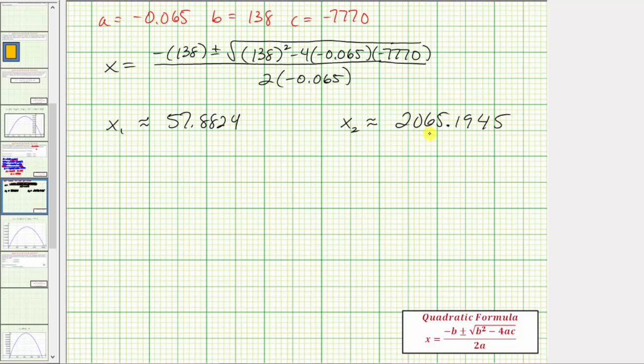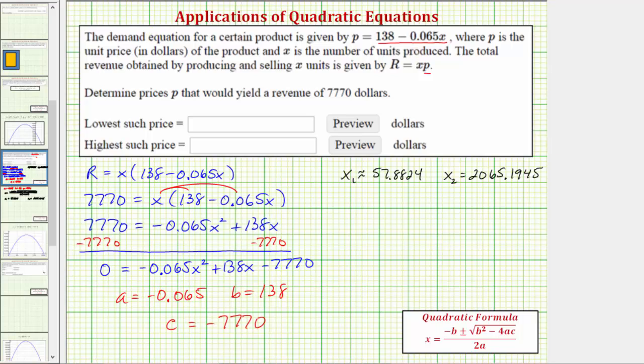Now take these two solutions back to the previous slide so we can actually find the price. Remember x is not the price, x is the number of units produced. So now we'll use the price equation to answer the question about what the lowest price and highest price would be to yield revenue of $7,770. So first we'll use x sub one. So we'd have p equals 138 minus 0.065 times 57.8824. So we'll call this p sub one. And p sub two would be equal to 138 minus 0.065 times 2065.1945.